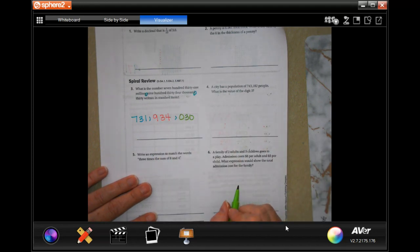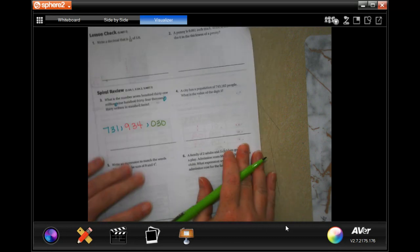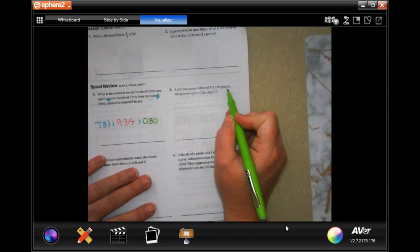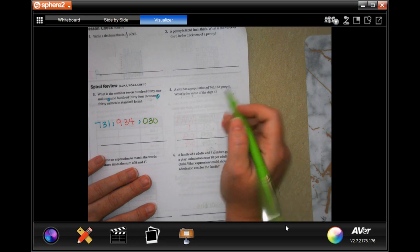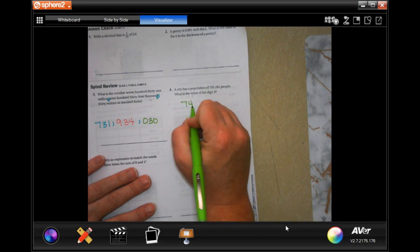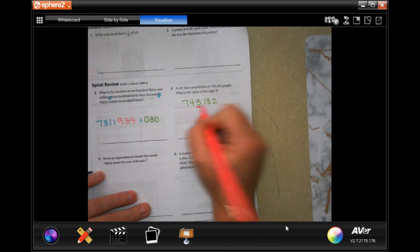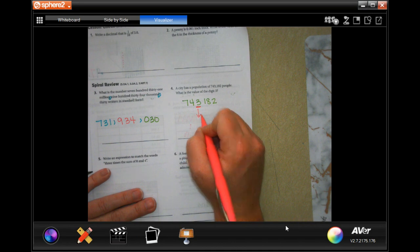A city has a population of seven hundred and forty three thousand one hundred and eighty two people. What is the value of the digit three? Seven four three one eight two, and it wants the value of the three. That's perfect because all we have to do is drop down the three and everything after it becomes a zero.